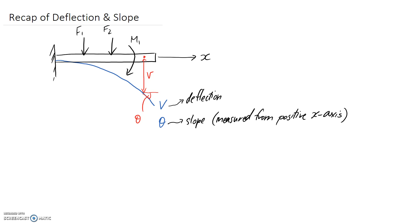How you can get these equations is you need to solve a differential equation. In this equation, E is Young's modulus, I is the second moment of area for your cross-section, V is the deflection, X is the distance along the beam, and M is the moment, the internal moment, that you have at your point of interest as a function of x.